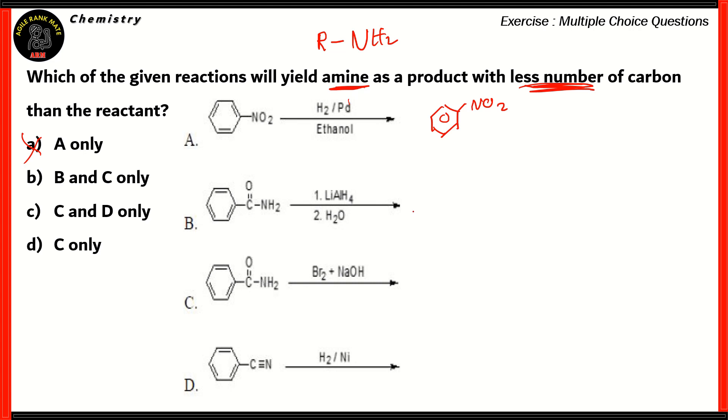Now, if you look at reaction number B, we have benzamide, and benzamide is reacted with lithium aluminum hydride along with water, and this forms nitrobenzene. So, again, any option with reaction B is also incorrect. So, therefore, option B is incorrect.